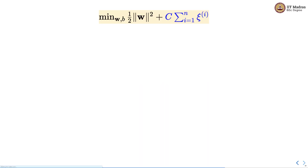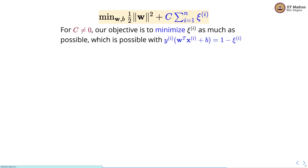We had an objective function: minimize half of norm squared plus C times the sum over all training examples of xi_i. For C not equal to 0, our objective is to minimize xi_i as much as possible, and this is only possible with the equality constraint yi times (w transpose xi + b) = 1 - xi_i.